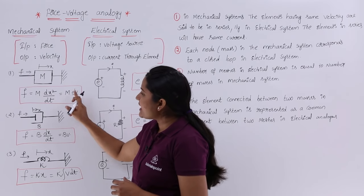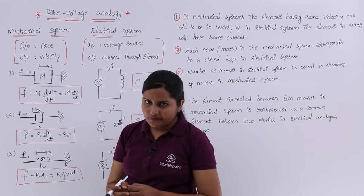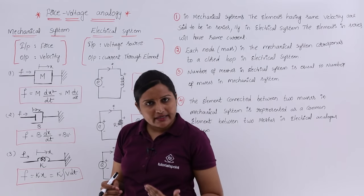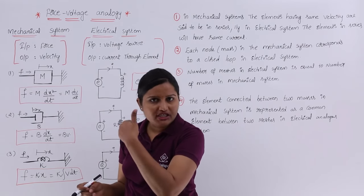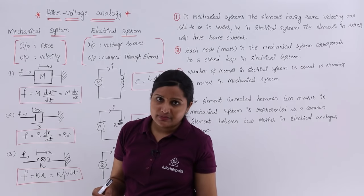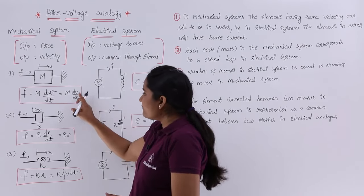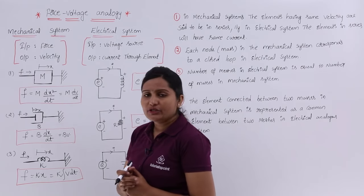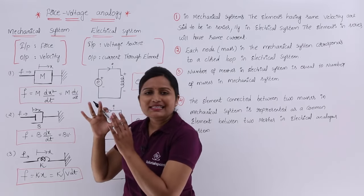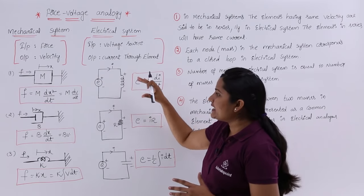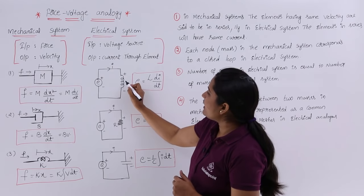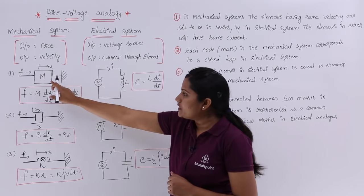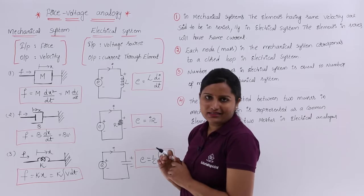We can also write this as M·dv/dt, because acceleration can be written as d²x/dt² or d/dt of velocity. Differentiation of velocity or double differentiation of displacement is acceleration. So if you want to write in terms of voltage, the opposing force by this mass is equivalent to M·dv/dt. If you have a mass element in a mechanical system, it can be treated as an inductor L in the electrical system, so M is considered as L.